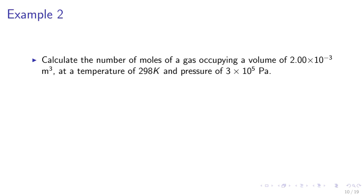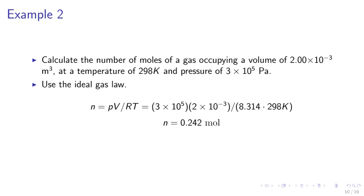Example 2. We may calculate the number of moles of a gas occupying a volume of 2 times 10 to the minus 3 meters cubed at a temperature of 298 Kelvin and a pressure of 3 times 10 to the 5 pascals. We may use the ideal gas law to calculate the number of moles, n equals PV over RT. We may calculate the number of moles, 0.242 moles.